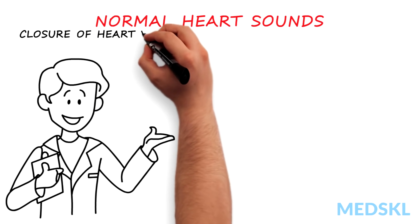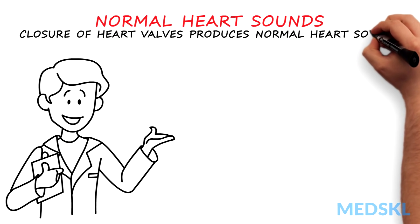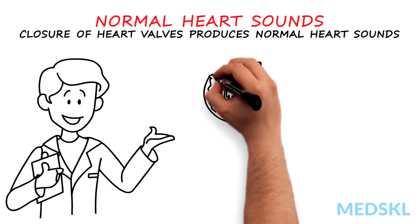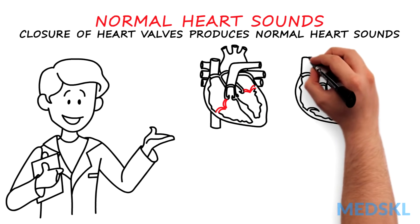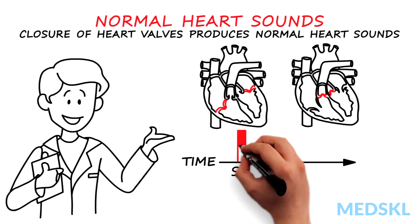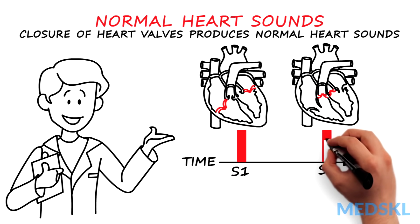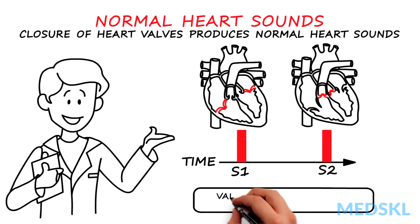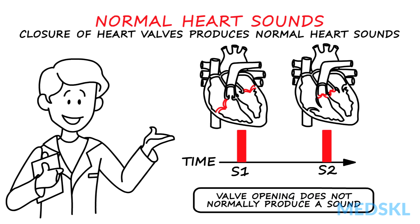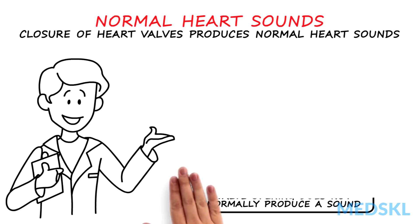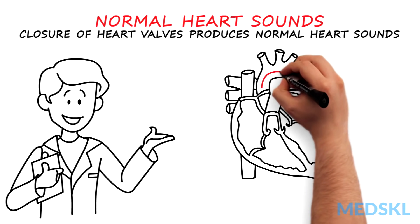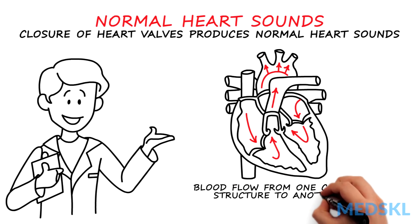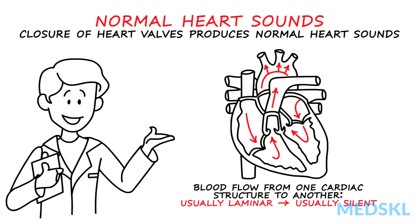Recall that it is closure of heart valves that produces the normal heart sounds. Mitral and tricuspid valve closure produces the first heart sound, S1, and aortic and pulmonic valve closure produces the second heart sound, S2. Heart valve opening does not normally produce a sound. Flow of blood from one cardiac structure to another is usually laminar and therefore silent under normal conditions.